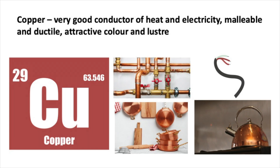Let's look at some examples of transition metals. The first example is copper, symbol Cu. Copper is a very good conductor of heat and electricity. It's malleable, which means we can hammer it into different shapes, and it's ductile, which means it can be drawn into wires. It has an attractive orangey-brown colour. Copper is used in electrical wiring because it's a good conductor of electricity and is ductile. It's used in hot water pipes because it's a good conductor of heat, and in making pots, pans and kettles because of its attractive appearance and good heat conductivity.